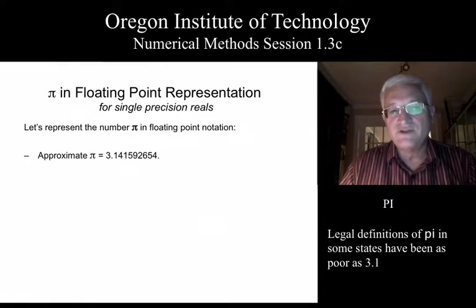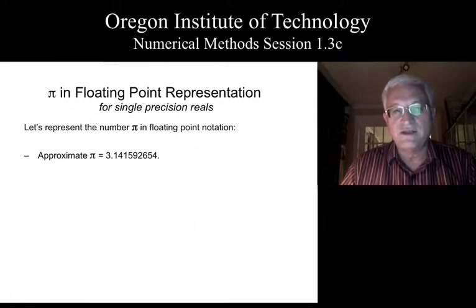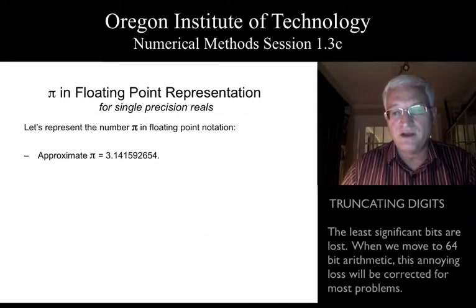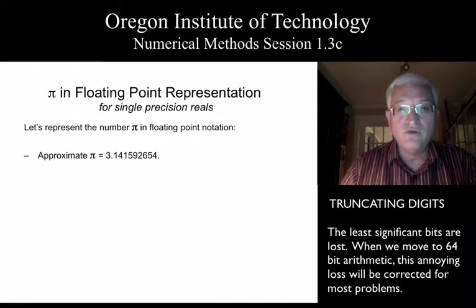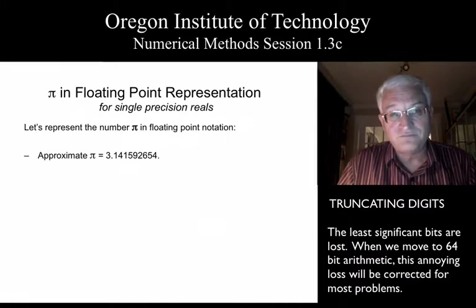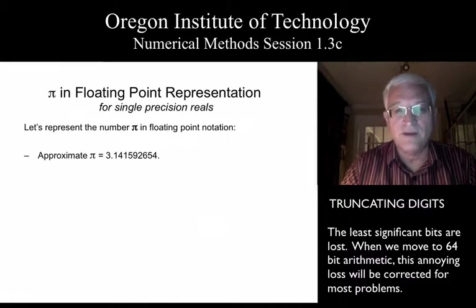What you'll find is kind of interesting is we will only partially succeed at storing that number. Turns out that the representation you're looking at now is too precise for a single precision to be able to manage. And we'll have to live with truncating off some digits to the right. As we move to the next session, we will figure out how to solve that problem as well.